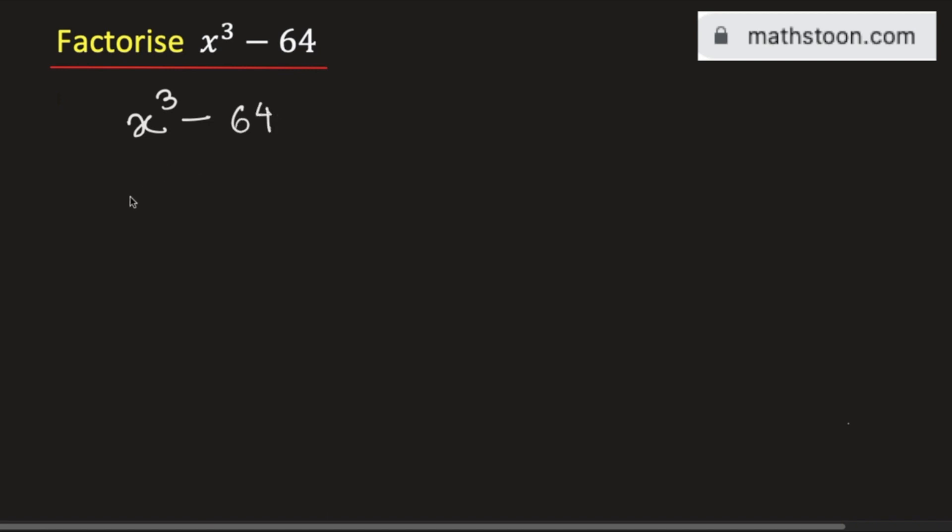To find this factor, we will write this as x cube minus 4 cube, as 4 cube is equal to 64.